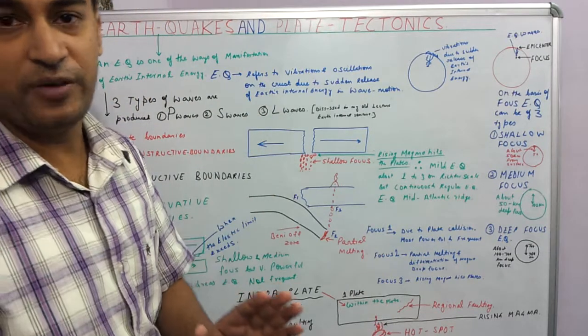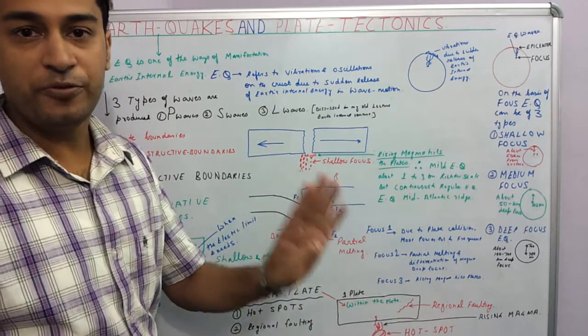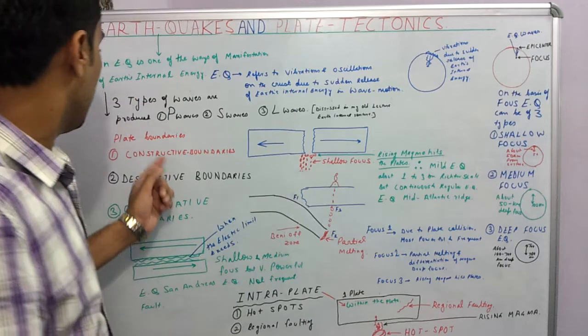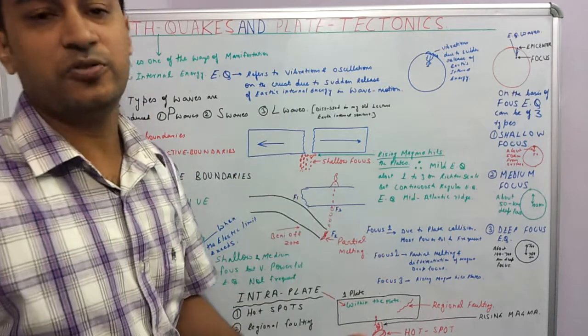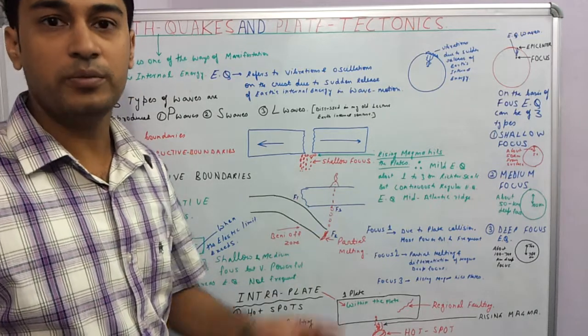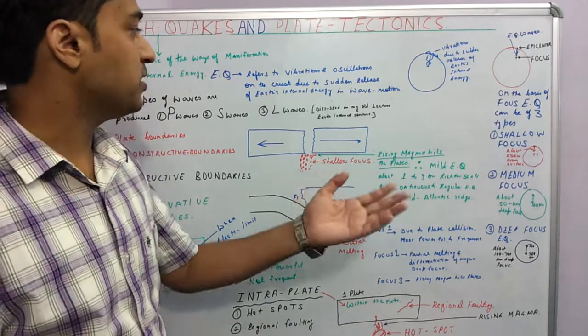Now energy in the form of waves is manifested in three kinds of waves: primary waves, secondary waves, and L waves. I have discussed these waves in my earlier lecture on internal structure of the Earth and seismic waves.